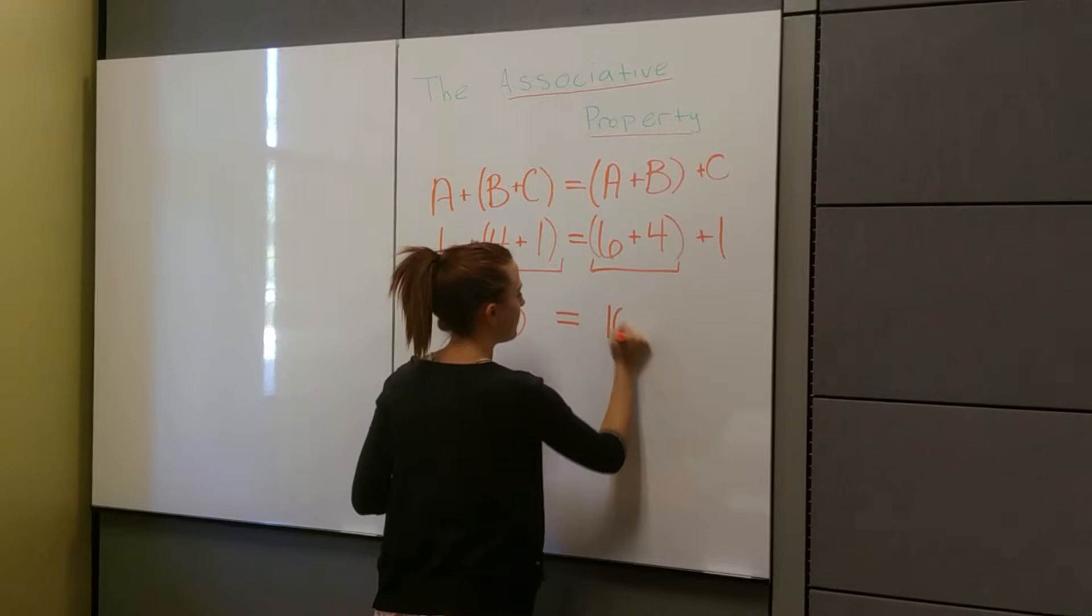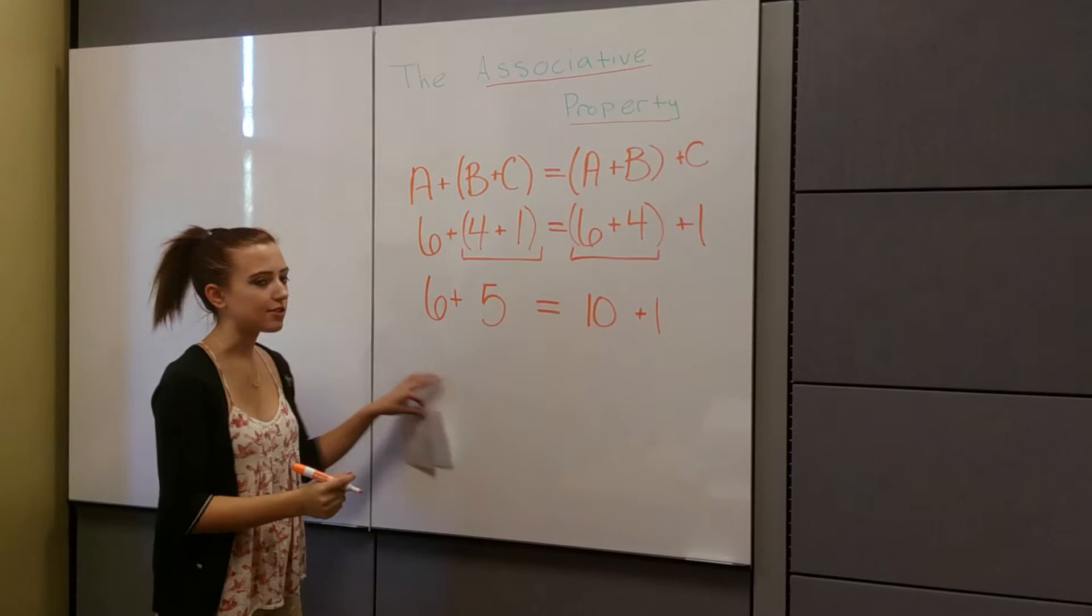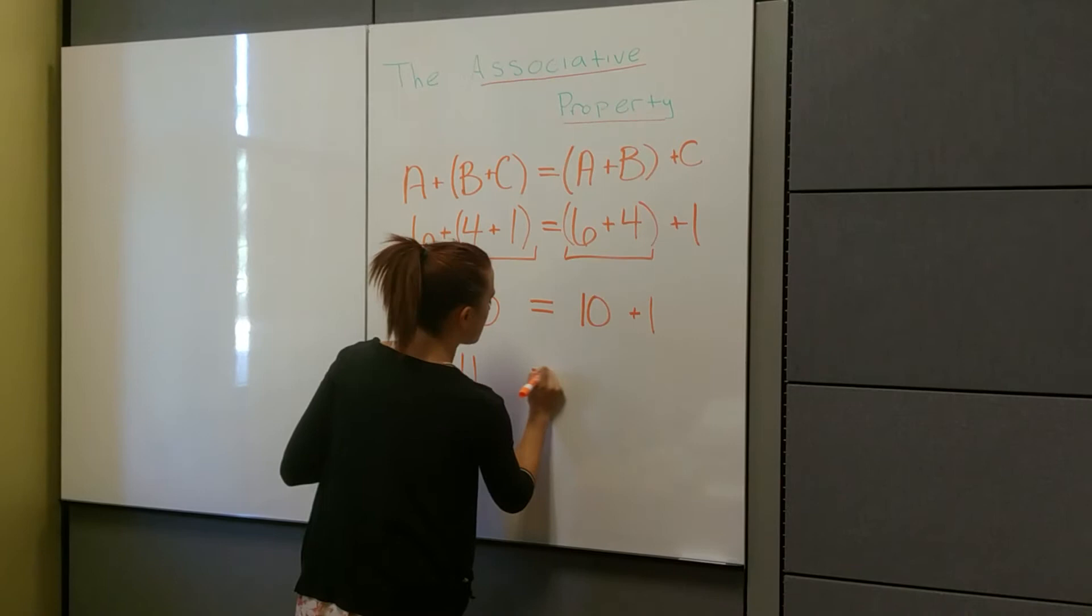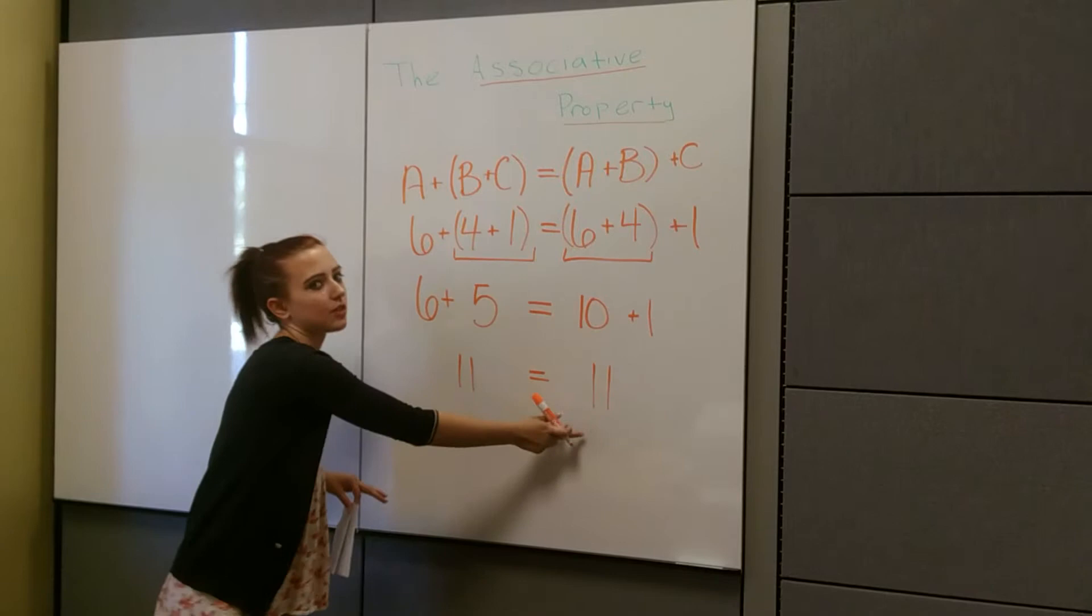And so now if we solve each side, we get 6 plus 5 is equal to 11. And then our equals sign, 10 plus 1, is also equal to 11. So we get 11 equals 11. So that goes to show that this original statement that we wrote up here is true.